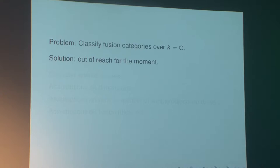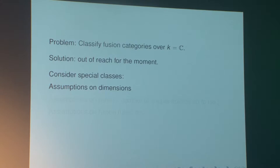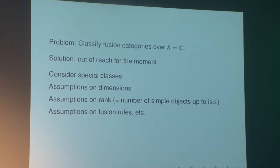Finite means it is finite as a K-linear abelian category, which can be characterized by being equivalent to the category of finite dimensional modules over some finite dimensional algebra — in this case semi-simple. The problem is to classify such fusion categories over K up to equivalence of monoidal categories. The solution is out of reach for the moment; however, there are results concerning certain assumptions on the dimension of the category, or on the rank — which is the number of simple objects up to isomorphism. Very few general results are known at the moment.